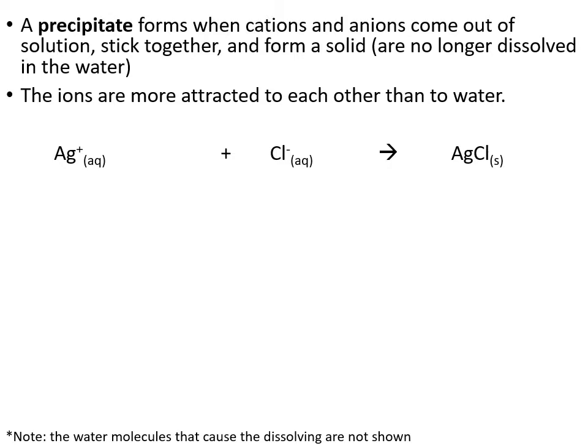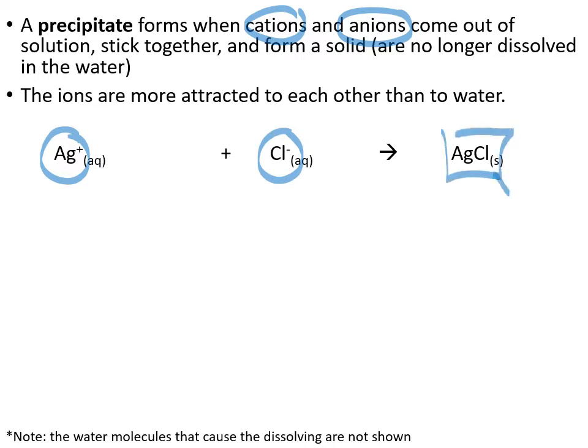With a precipitate, this is when you have two solutions coming together and they form a solid once you mix them. A precipitate will form if you have a cation and an anion that are more attracted to each other than they are attracted to water. So initially they'll be in the water, and when they meet — for example, a silver ion and a chloride ion — they form a crystal lattice structure that is a solid. That's what a precipitate is.